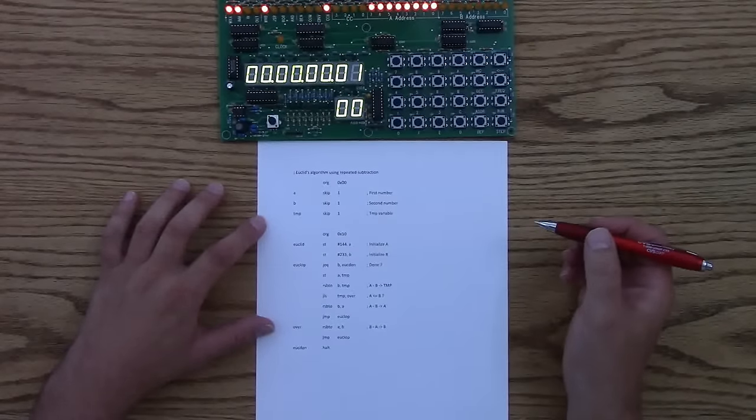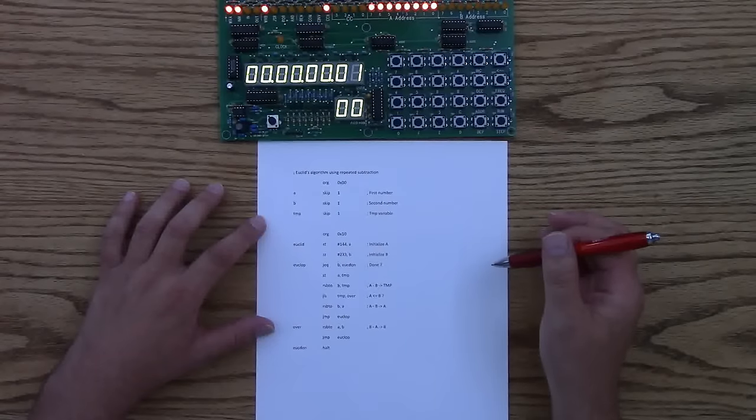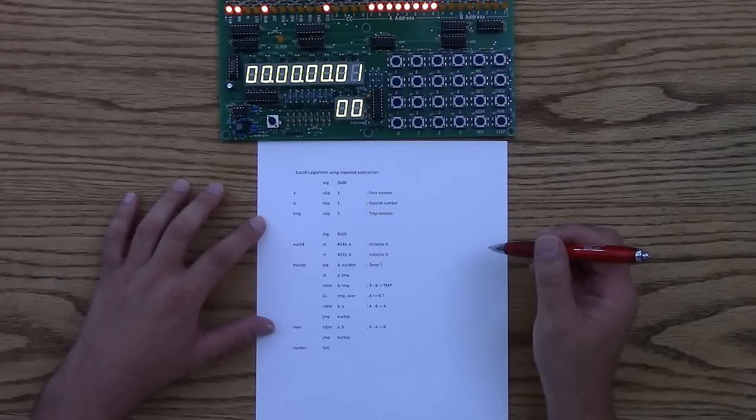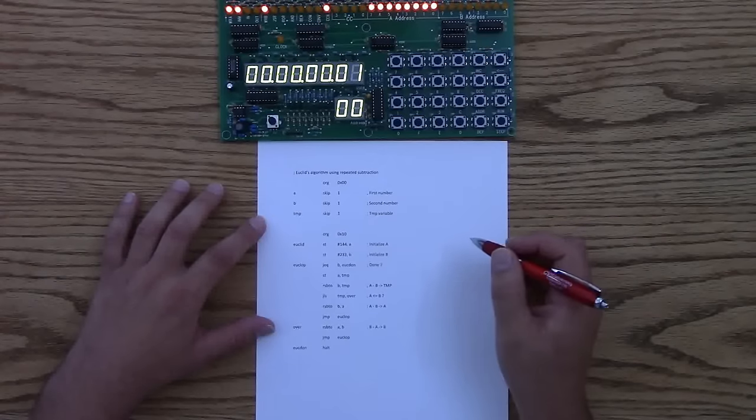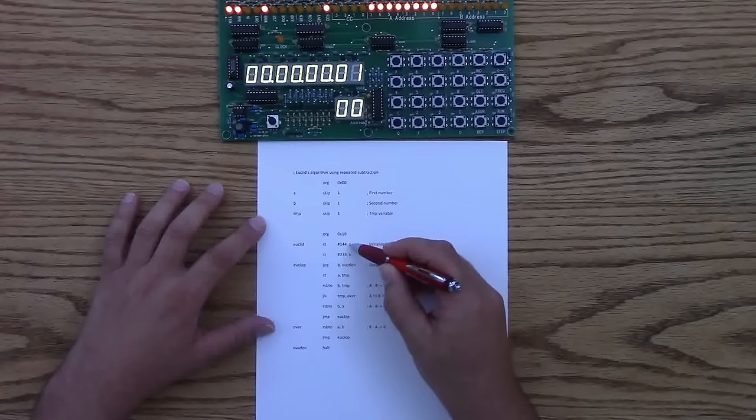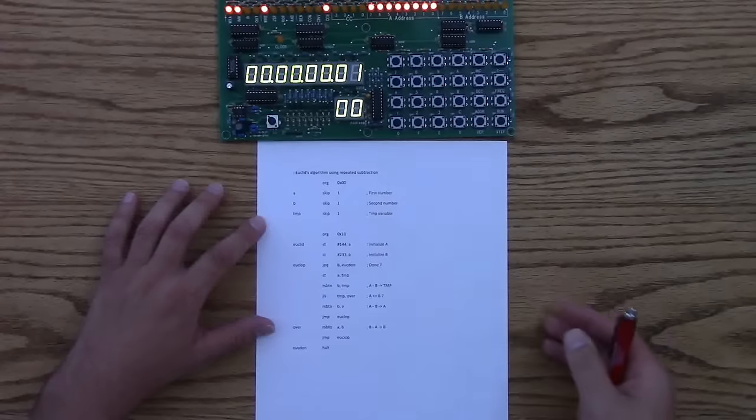Euclid's algorithm is pretty efficient, but for a demo program I want it to run for a fairly long time. So it turns out if you take two successive numbers from the Fibonacci sequence, then that makes Euclid's algorithm take the longest time. So that's where this 233 and 144 come from. And their greatest common divisor is 1.